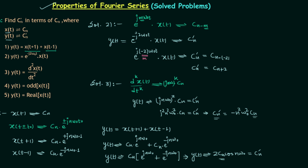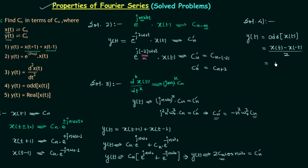Problems 4 and 5 require a basic understanding of real and odd signals. In problem 4, y(t) is the odd part of x(t), where odd part = [x(t) - x(-t)] / 2. Using the time reversal property, x(-t) has coefficient c₋n, so cn' = (cn - c₋n) / 2.